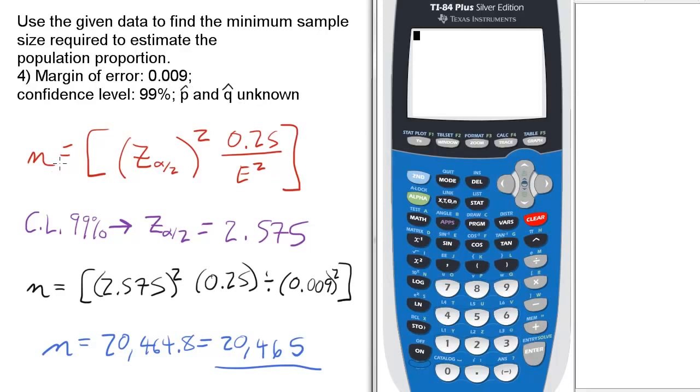So the equation for this is n equals z alpha over 2, that quantity squared, times 0.25, since p hat and q hat are unknown,